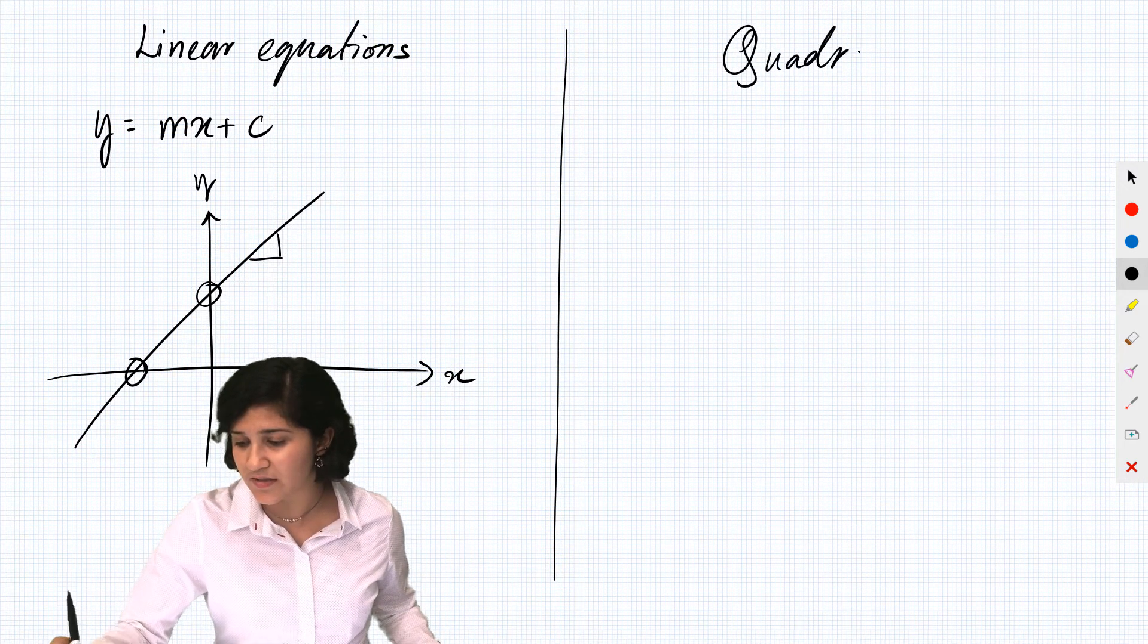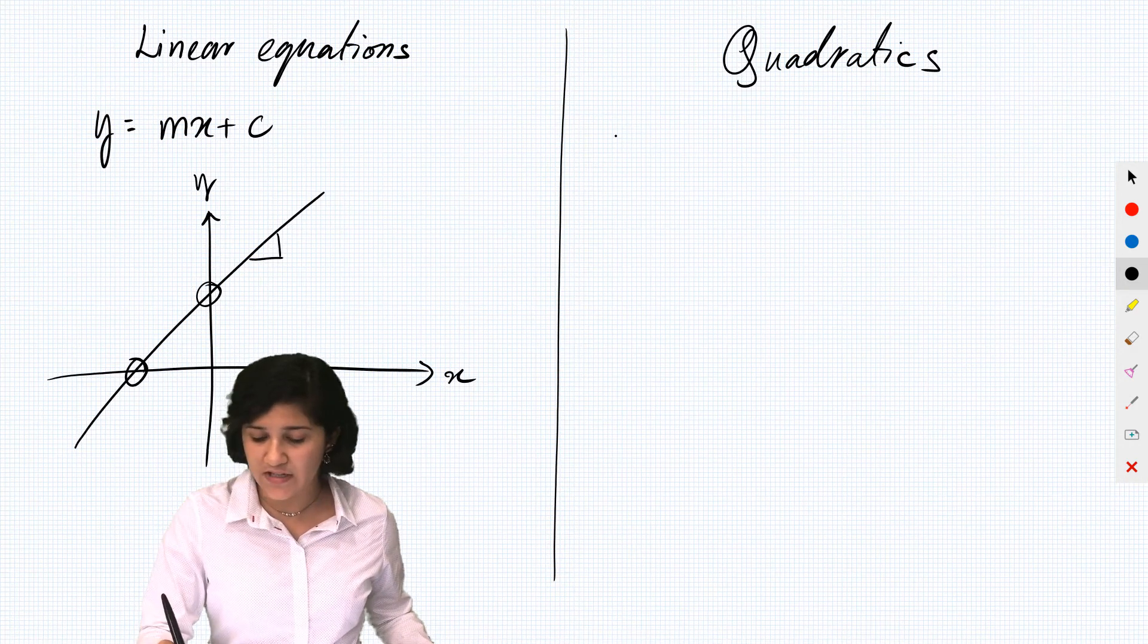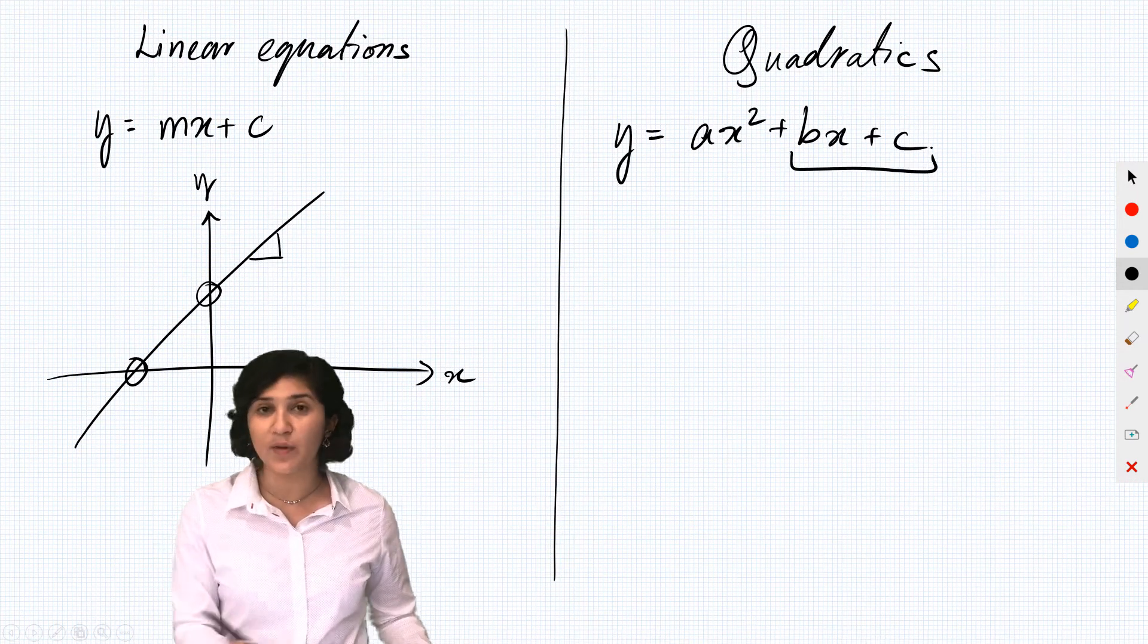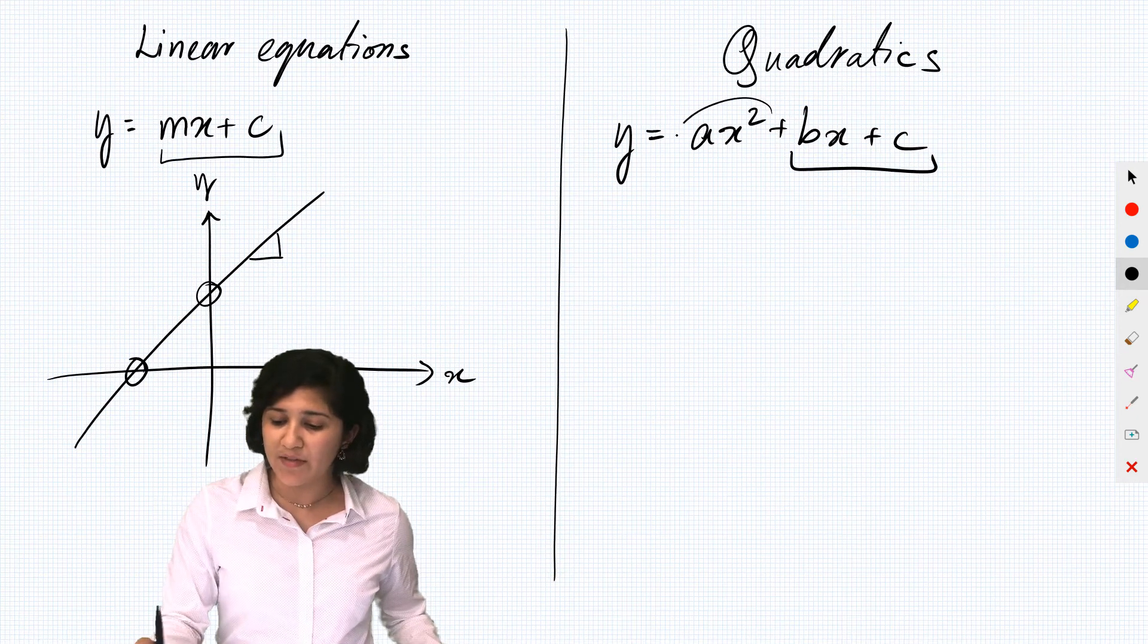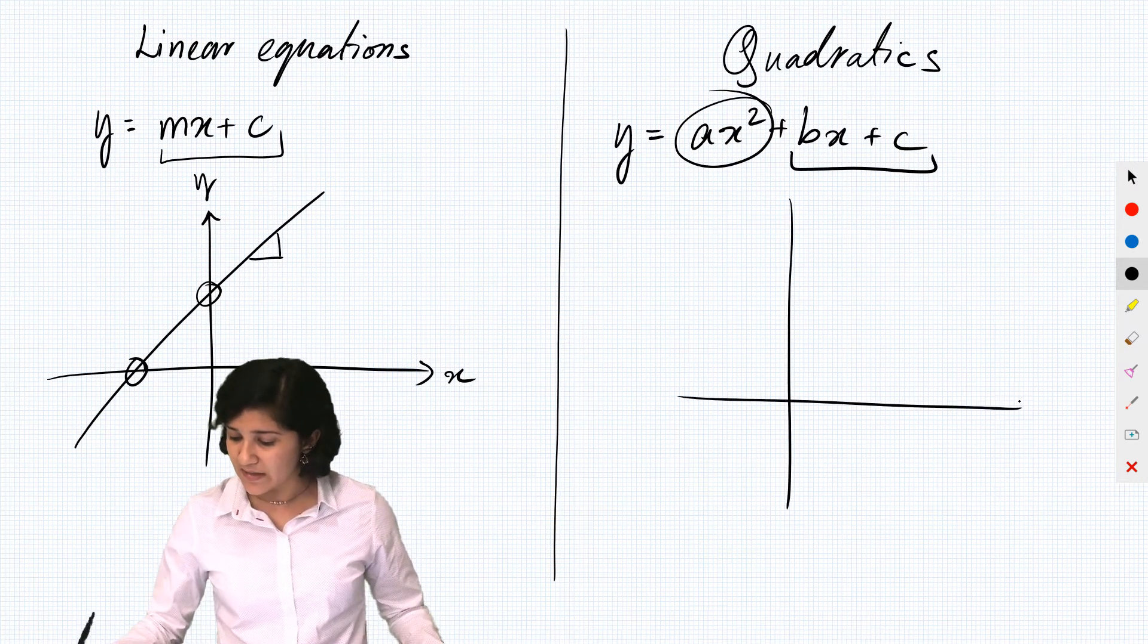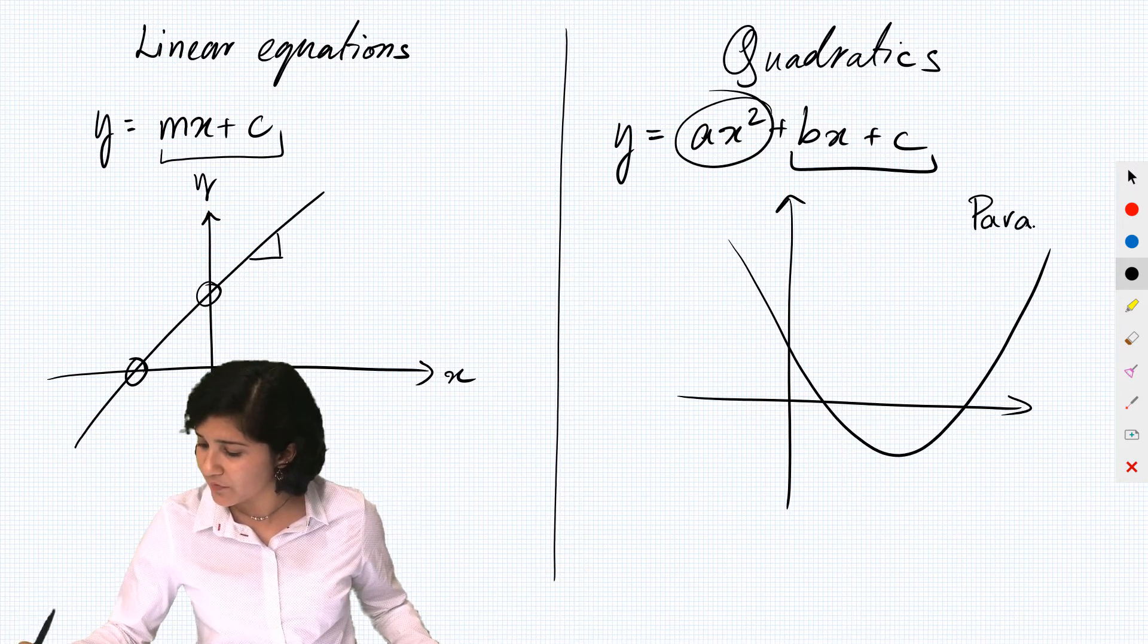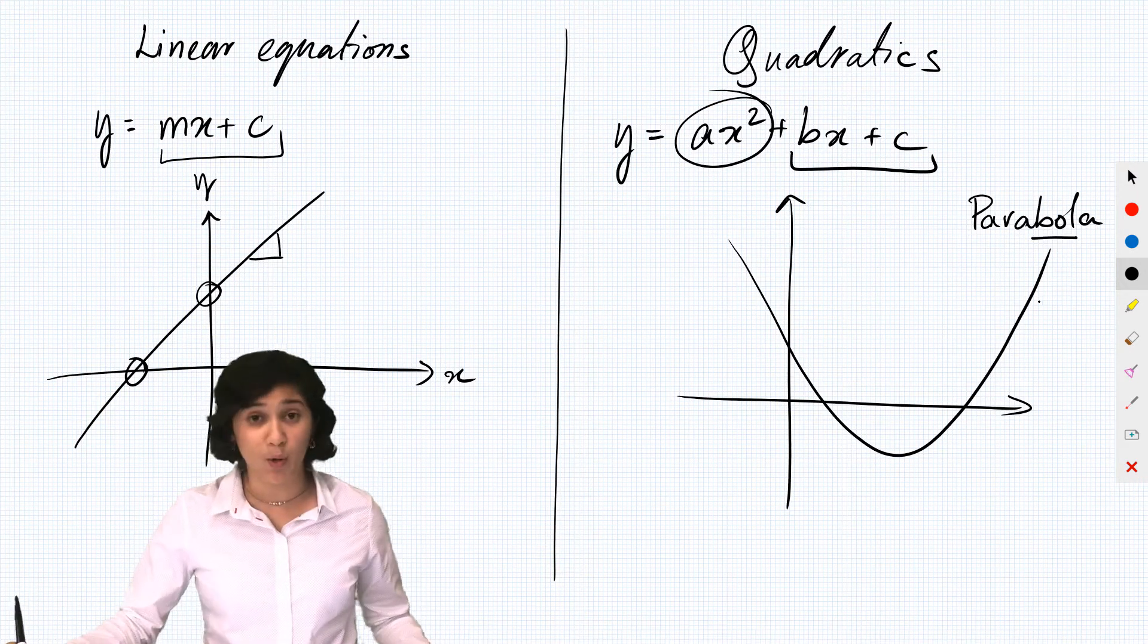So quadratic equations are equations that have the form ax squared plus bx plus c. This part of the equation is quite similar to the linear equation, but we have this extra term called the x squared term. And when we graph these, they have the shape of a parabola. You can remember the name parabola because it has this ball in it and it's kind of a ball shape.